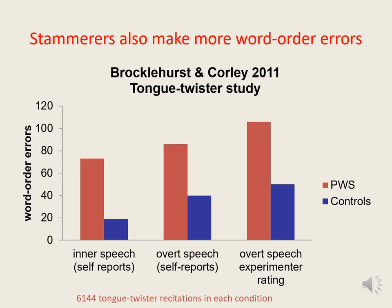The high number of errors made by the stammerers in their inner speech suggests that at least some of the error-proneness of people who stammer is due to poor or impaired speech planning, quite irrespective of whether or not they experience difficulties with articulation. In our experiment, we were only able to check the numbers of word-onset errors and word-order errors that participants made, and found that participants who stammer made approximately twice as many of both types of error compared to normally fluent controls — twice as likely to accidentally say words with a wrong initial sound and twice as likely to say the words in the wrong order. These were the only types of error we counted, but it's likely that people who stammer are prone to making large numbers of other types of error as well.